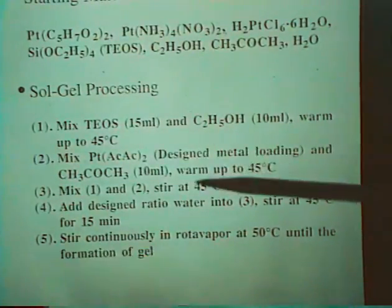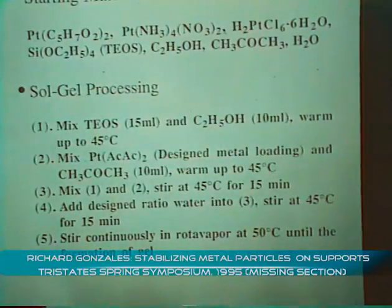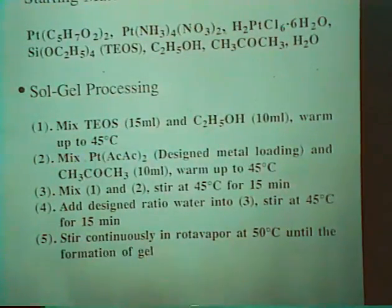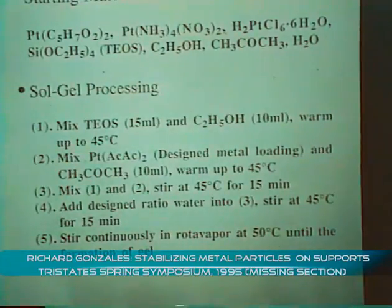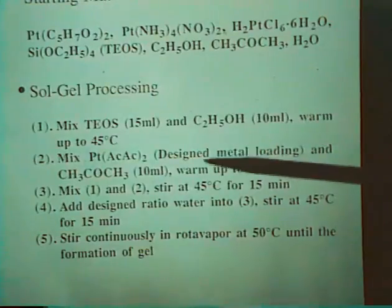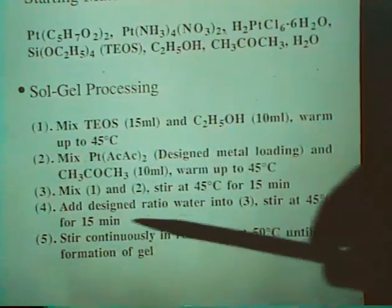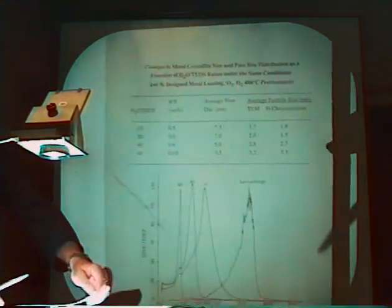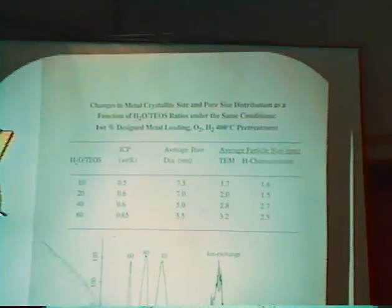The procedure then was to start out with the tetraethoxycylane and dilute it with a solvent, usually ethanol. Later, we found that acetone was better. We heat this to 45 degrees. We mix in the precursor. The most useful was platinum acetylacetonate at the desired metal loading. We mix these two solutions together. This is just a Betty Crocker recipe. And then we just add the designed amount of water to trigger off the synthesis. We did this in the rotavapor at various temperatures. 50 was about the most optimal.